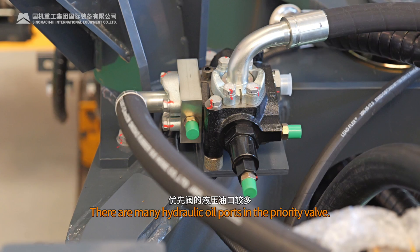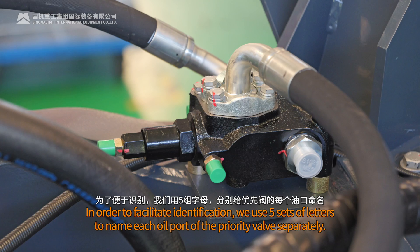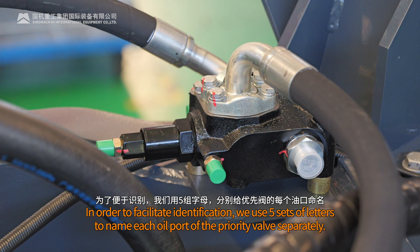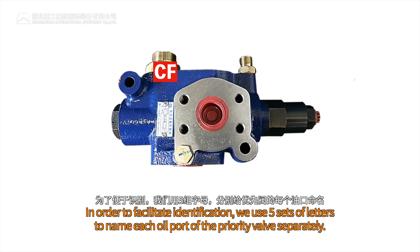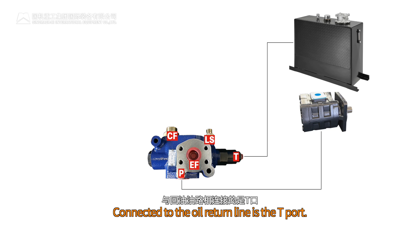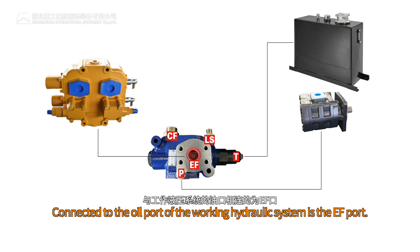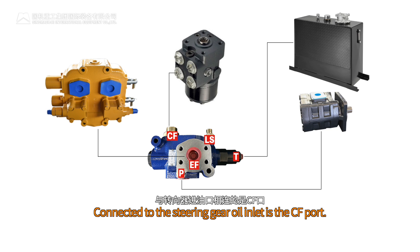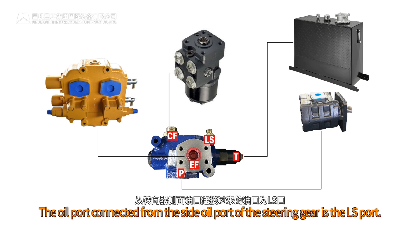There are many hydraulic oil ports in the priority valve. In order to facilitate identification, we use five sets of letters to name each oil port separately. The oil port connecting the steering oil pump is the P-port, which is the inlet port. Connected to the oil return line is the T-port. Connected to the working hydraulic system is the EF-port. Connected to the steering gear oil inlet is the CF-port. The oil port connected from the side oil port of the steering gear is the LS port.